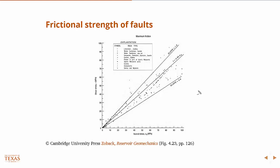So basically we can come up with some bounds that say that the coefficient of friction is always between somewhere between 0.6 and 1.0. And so this is the 0.6 line, this is the 1.